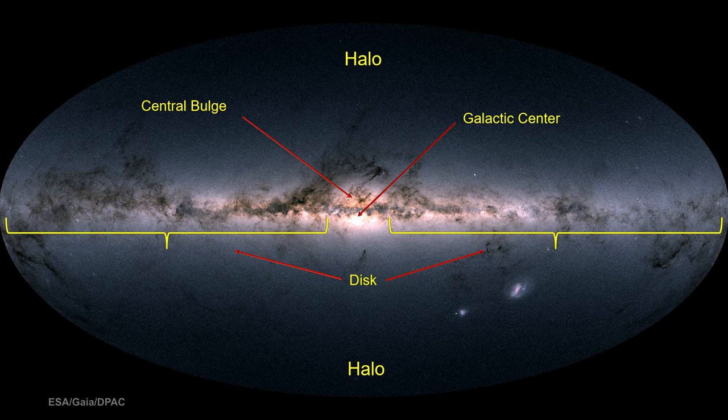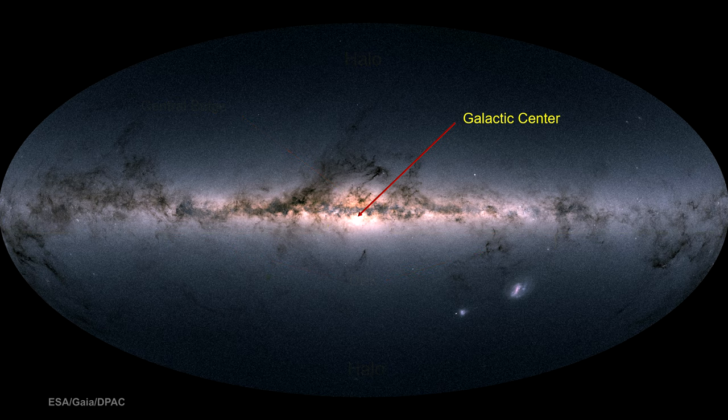The disk is at least 100,000 light-years in diameter, and the halo is much larger than that. We'll go into each of these galaxy components, starting with the galactic center.